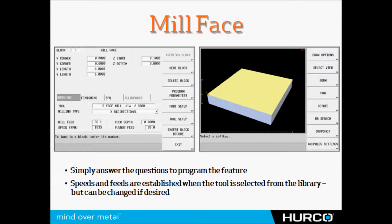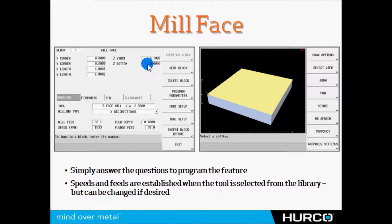Let's walk through milling this particular part. First, we're going to establish Z0 and machine some material off the top to create the face of the part. We do that in a mill phase block — we simply fill out the individual fields: a corner of the part, the length and width in X and Y, your Z start rapid position, your Z bottom, and the final location of the face of the part — in this case Z0. Then select the tool and strategy: X bidirectional, which faces back and forth in a zigzag. Speeds and feeds are already set with the tool.